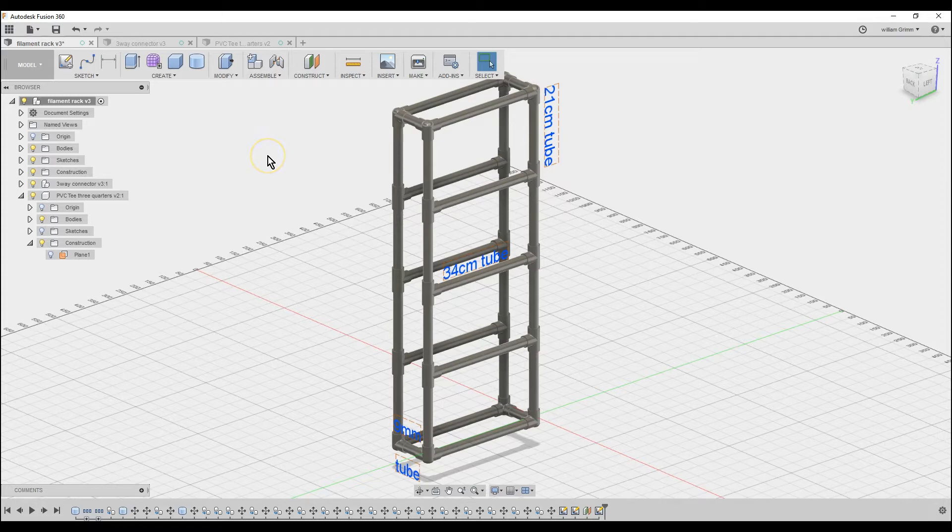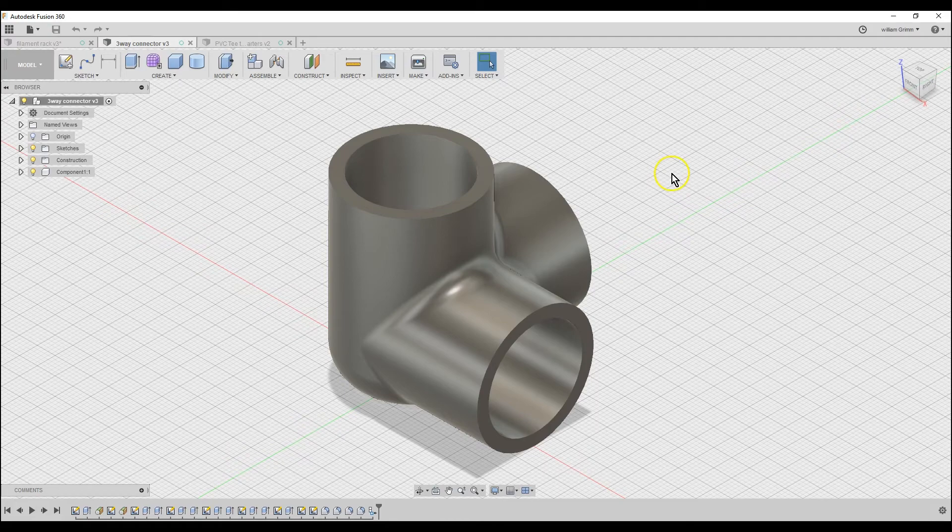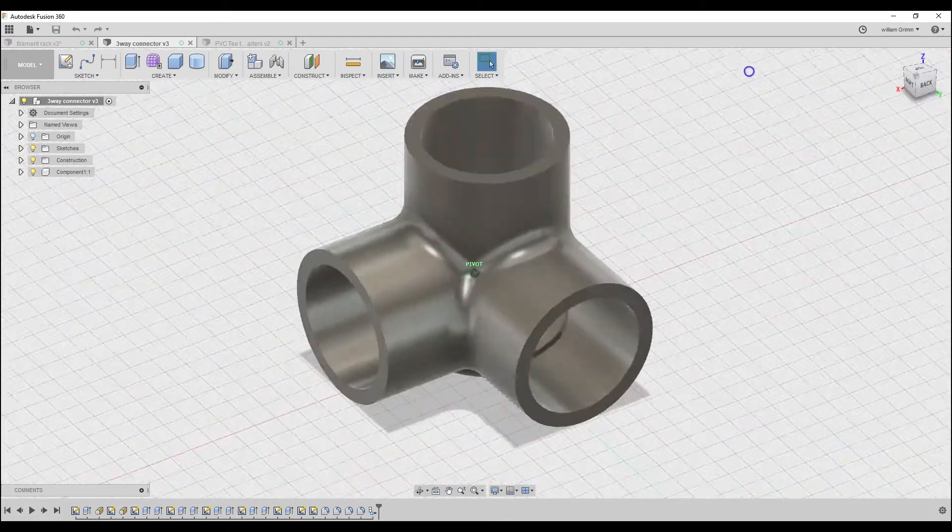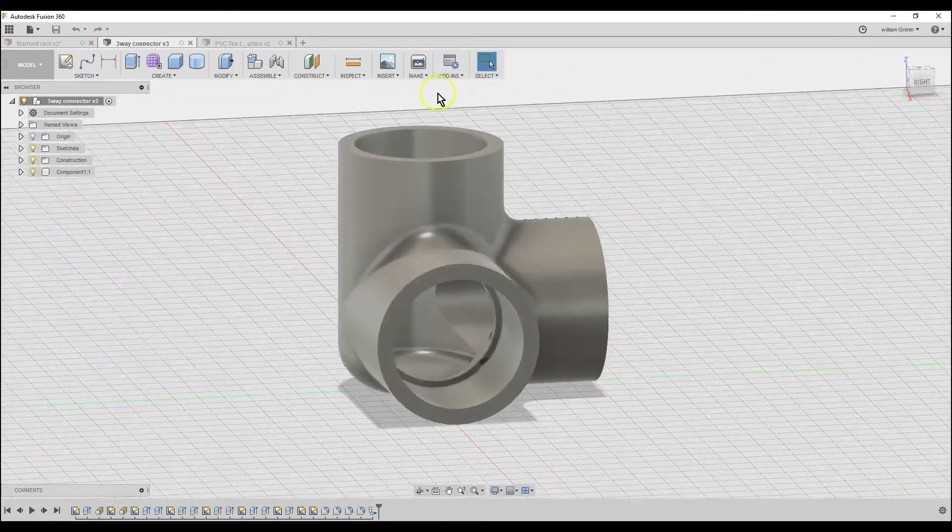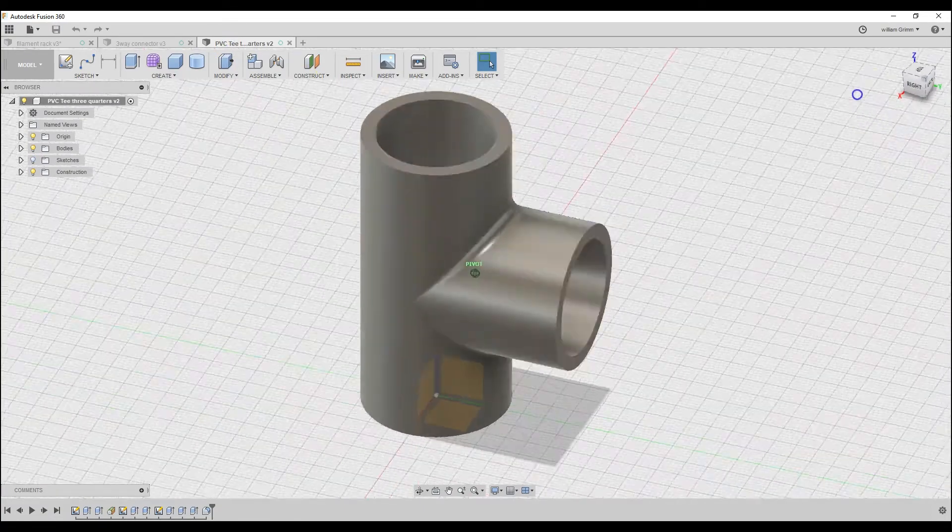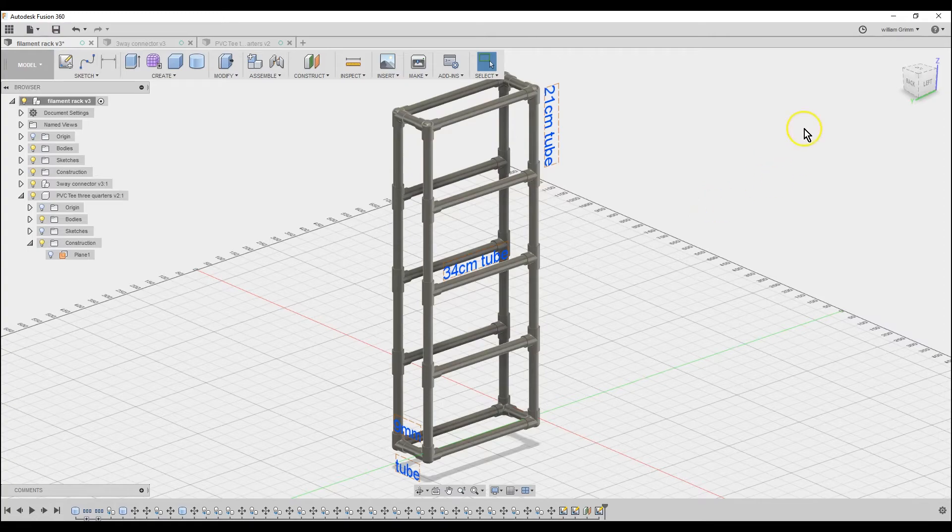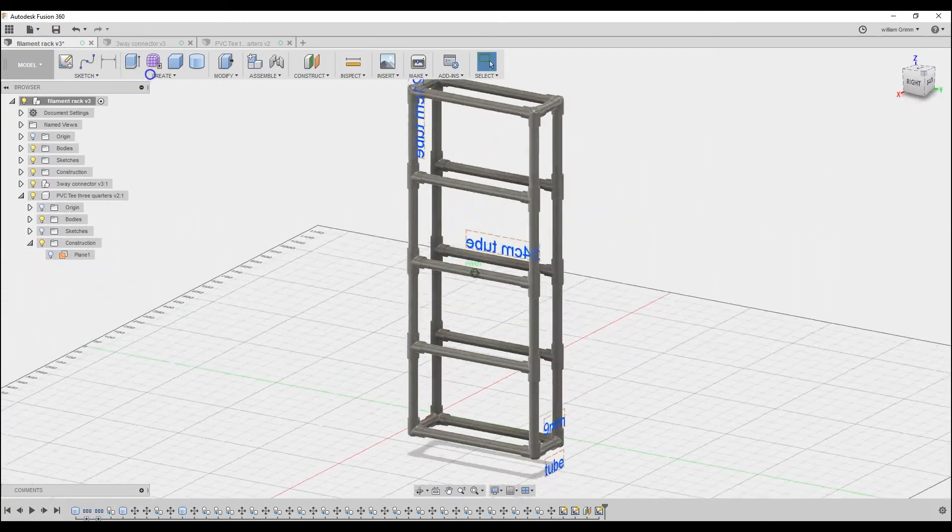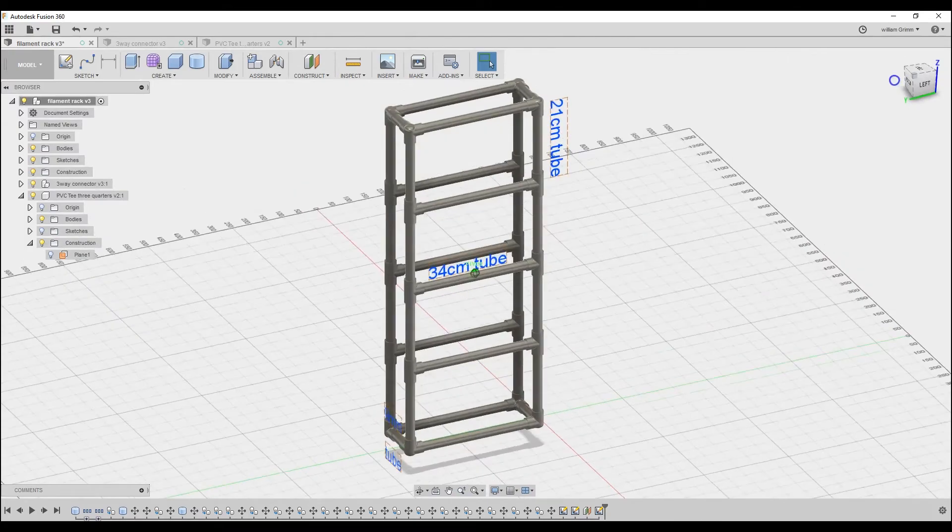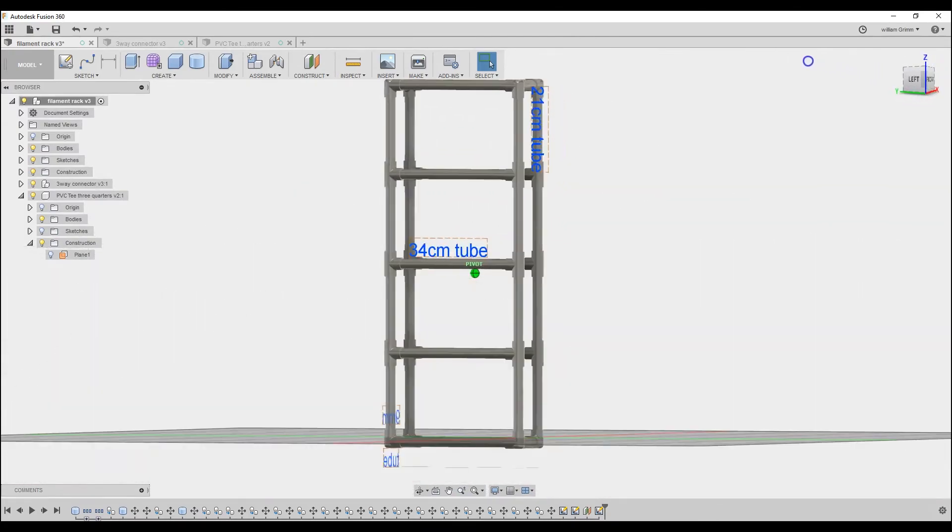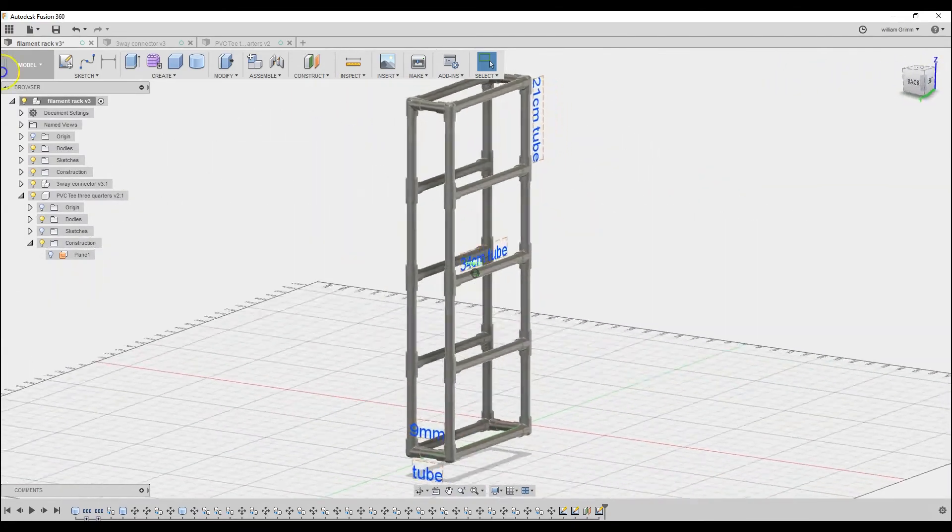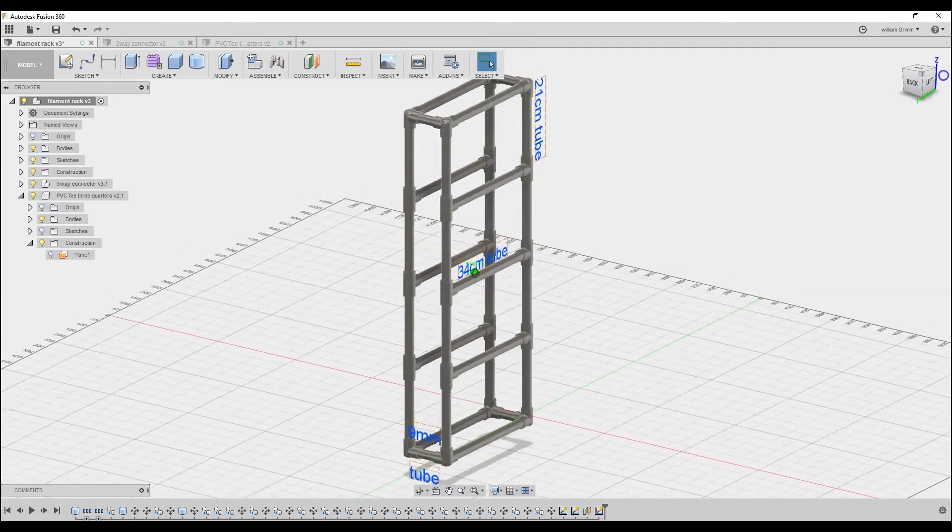Here's the rack in Fusion 360 that I kind of tested out the sizes and lengths in Fusion 360. I did this by designing the three-way tee in Fusion 360 and the regular PVC in Fusion 360, and then I just created an assembly with everything together so that I could test different lengths and different widths to see how the filaments would fit in there. Anyways just kind of thought I'd throw that in there again.